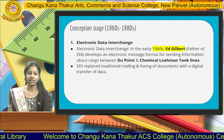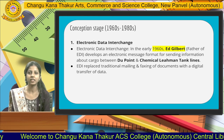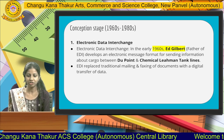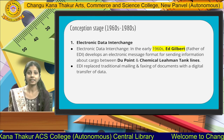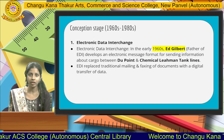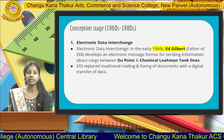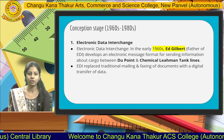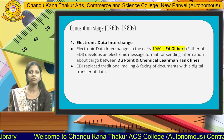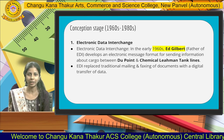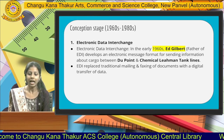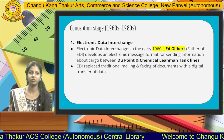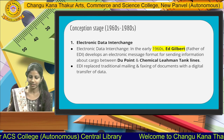The conception stage spans from the year 1960 to 1980, featuring electronic data interchange (EDI). EDI, where data was interchanged electronically, was first propounded in the early 1960s by Ed Gilbert, the father of electronic data interchange. He transferred information between DuPont and chemical lines, and EDI replaced the mailing and faxing system of documents with digital transfer of data.